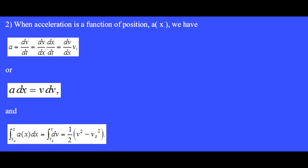When acceleration is a function of position a(x), we have a equals dv/dt. If we insert a dx over dx, then we can write this as dv/dx dx/dt. But the dx/dt, that's another velocity. So we have acceleration a equals v dv/dx, or we write that as a dx equals v dv.